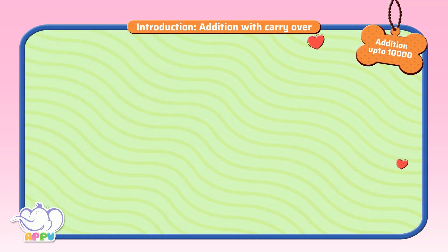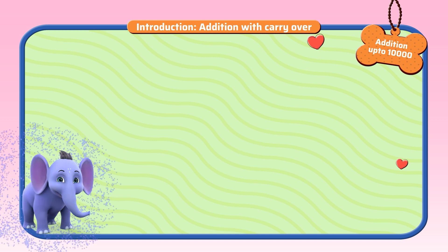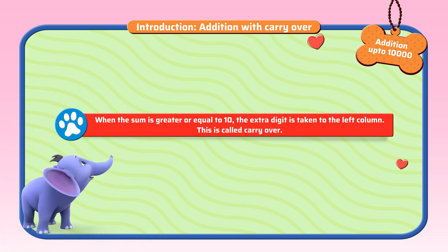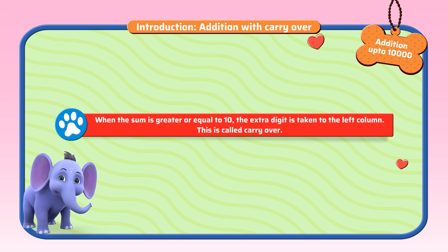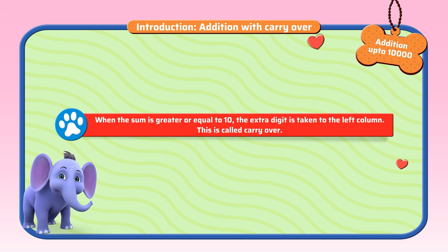We had learnt about the carryover earlier. Here's a recap. When the sum is greater than or equal to 10, the extra digit is taken to the left column. This is called carryover.